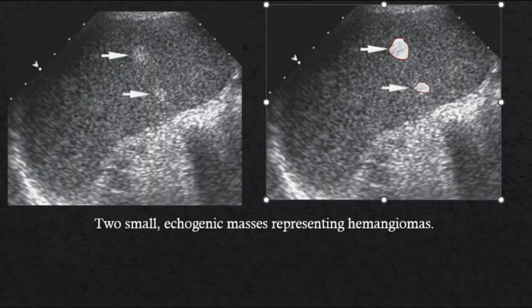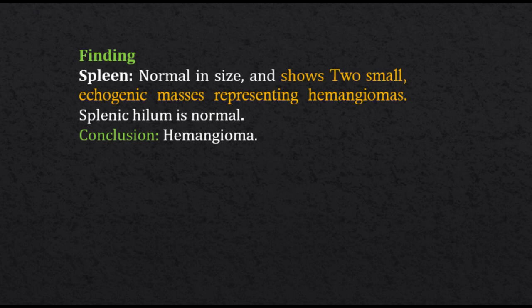Third case finding: spleen normal in size and shows two small echogenic masses representing hemangiomas. Splenic hilum is normal. Conclusion: hemangioma.